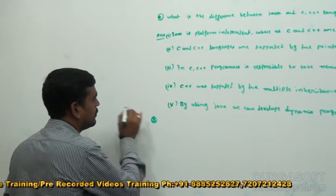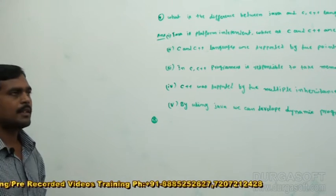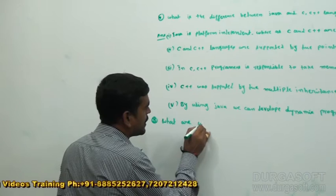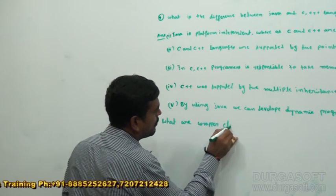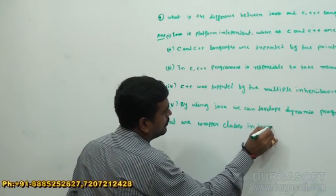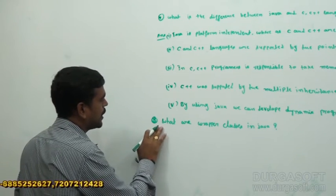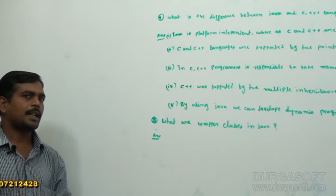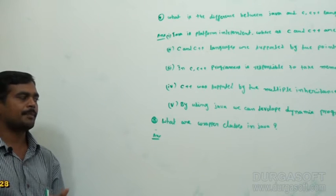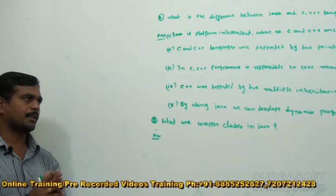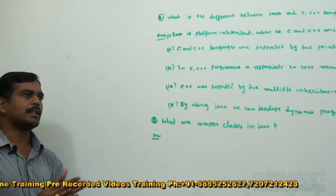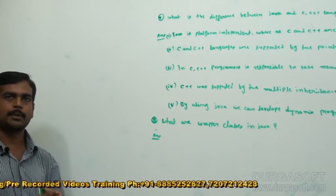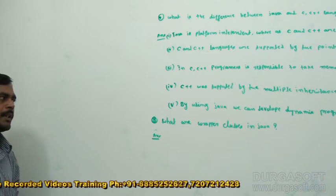The next question: what are the wrapper classes in Java? In Java, totally eight wrapper classes are there. By using these wrapper classes, we can convert our primitive to object type and object into primitive type. Totally eight primitive data types are there and eight wrapper classes are there.